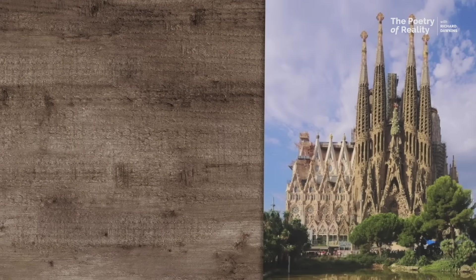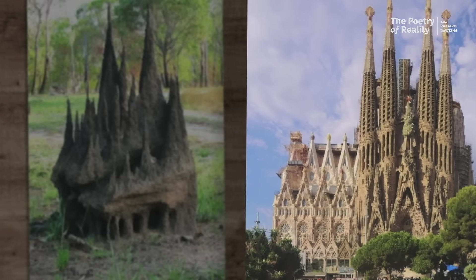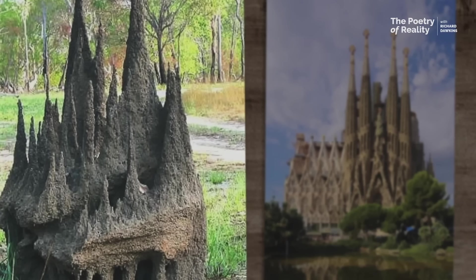Bottom-up design is a little bit hard to understand because we as humans are not very familiar with it. There's an illustration in Outgrowing God of a termite mound which looks extremely like a famous church in Barcelona, Spain, by the architect Gaudí — and they look extremely alike. But the architect's design is top-down. The termite mound, which looks very similar, is very far from top-down. It's bottom-up. What it means is that each individual termite is following little local rules — little local rules which have nothing to do with the grand design of the whole termite mound.